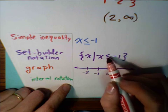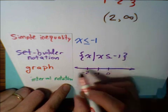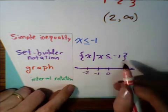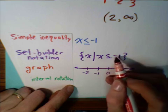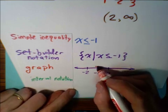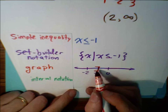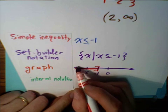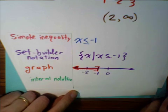And we want to go x is less than or equal to negative 1. So we are going to be shading to the left, but we are also including negative 1. That means we're going to use a bracket. Bracket means we include the endpoint. And then we shade to the left.